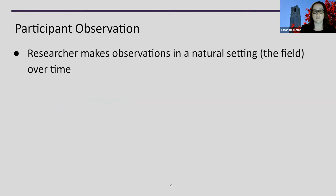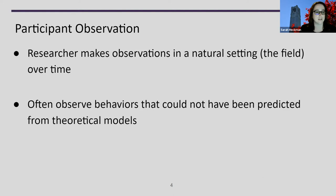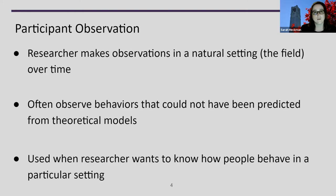With participant observation, we make observations in a natural setting or the field that we're working in, and we make them over time. We can observe behaviors that may not have been predicted from theoretical models. So if you're starting with an underlying theory, you might end up observing something that doesn't quite fit it, and that would allow for expanding the theory or maybe using a different theory. We can also use participant observation when we want to know how people behave in a particular setting, because what they say they'd do might be completely different from what they actually do.